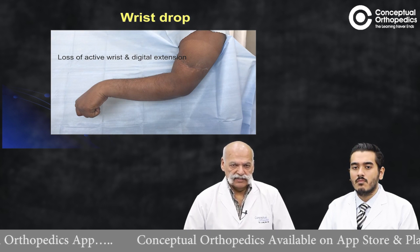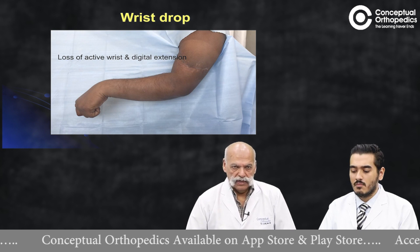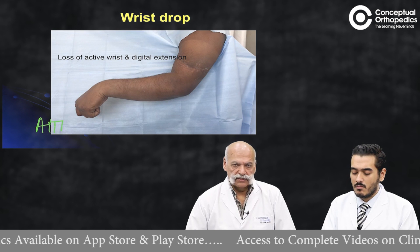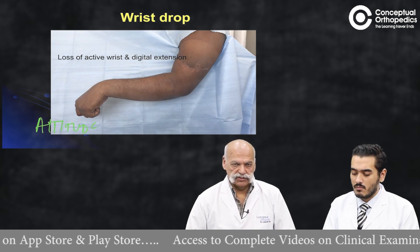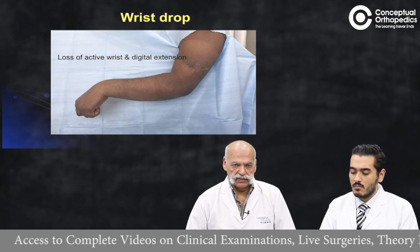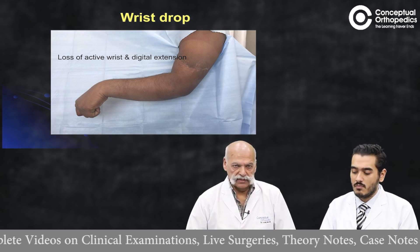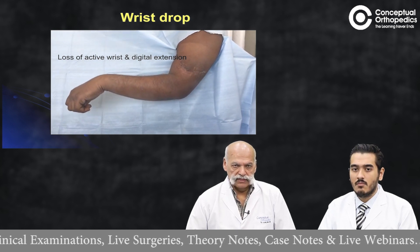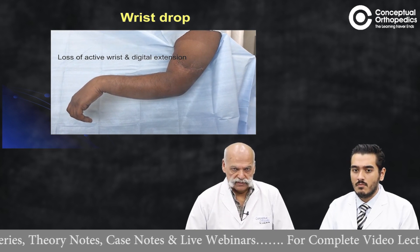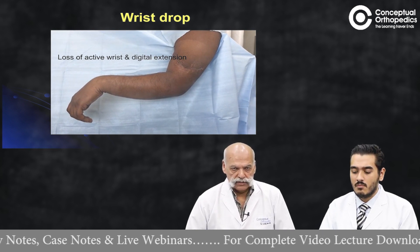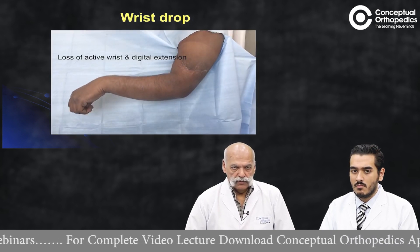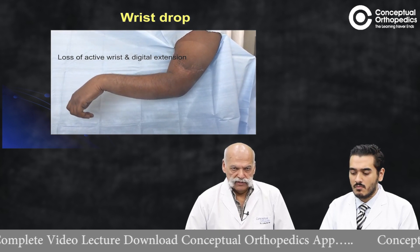The attitude of the patient is one of wrist drop, amounting to loss of active wrist and digital extension. The first command to give the patient is to try and dorsiflex the wrist, and here you see that in spite of his best efforts he is unable to dorsiflex the wrist — this is characteristic of a wrist drop.